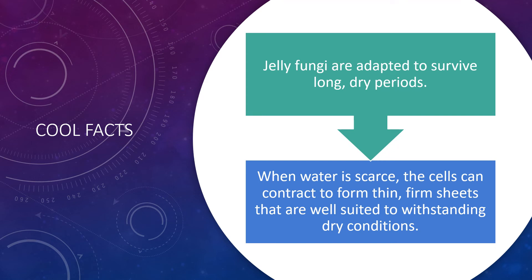These mushrooms can dry out and rehydrate repeatedly. This allows them to conserve resources by only releasing their spores when water is available. Because of this, jelly fungi can often be found during winter thaws when other mushrooms are hard to come by.